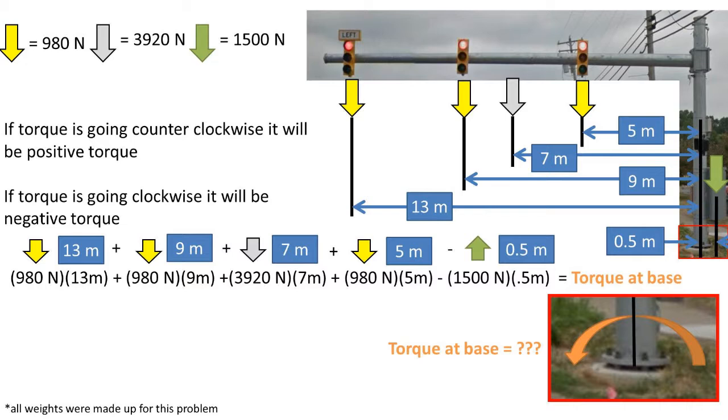If the torque is going clockwise it will be a negative torque. The electrical box on the opposite side of the post will be applying a torque in the clockwise direction. So this will be a negative torque and be subtracted to get the torque at the base.